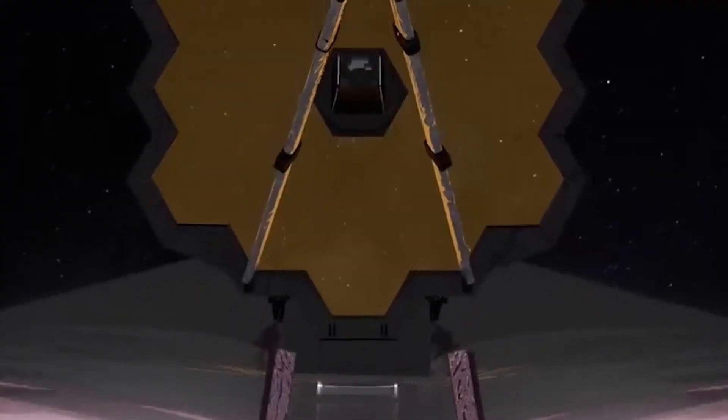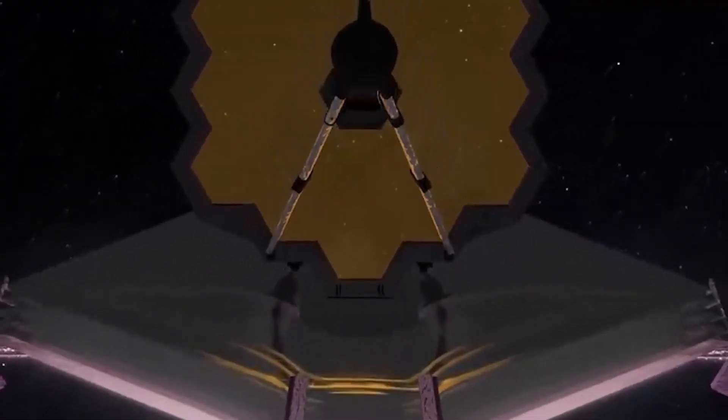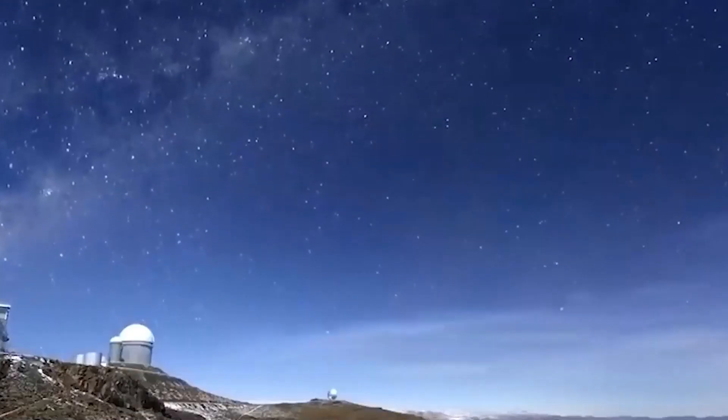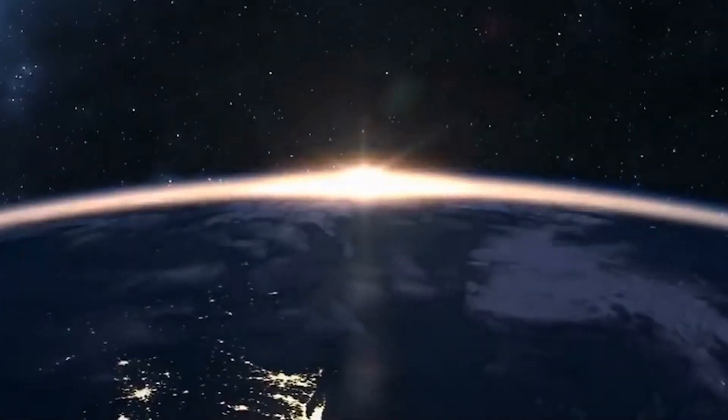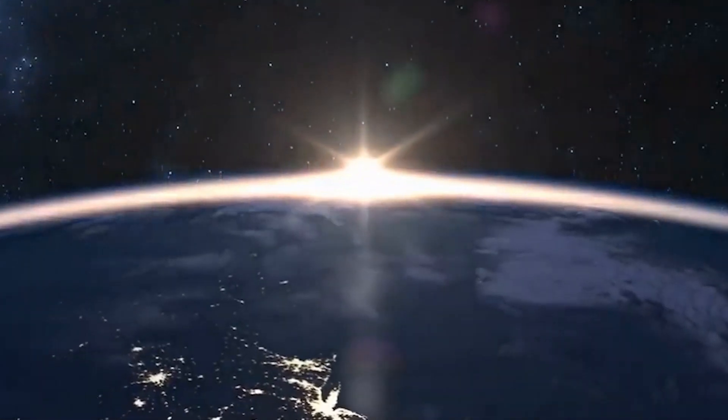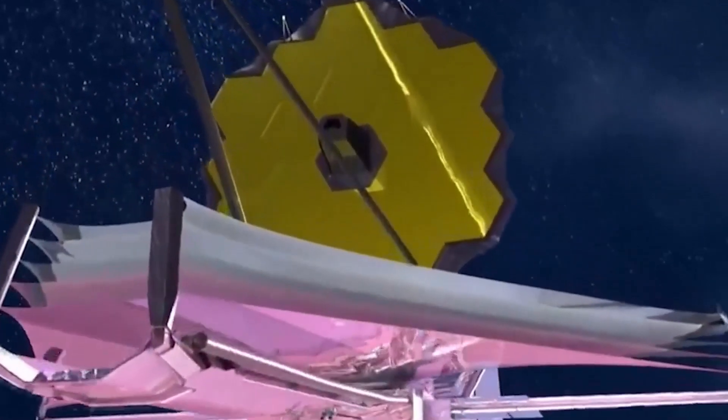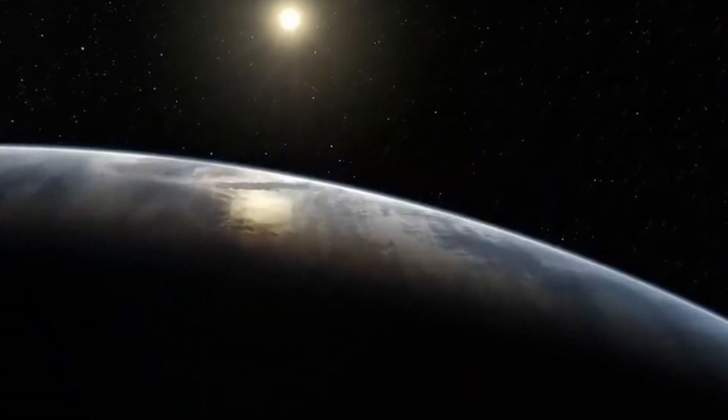The Webb could identify the artificial light with an accuracy of 85% if Proxima b's artificial nightside illumination exceeds 5% of the natural dayside illumination. Webb's detection rate would increase to 95% if artificial light reached 9%.